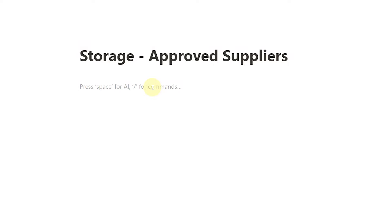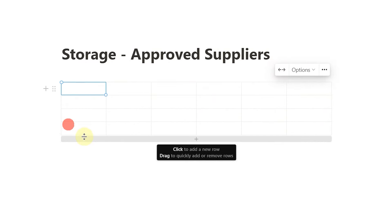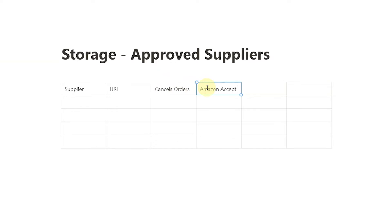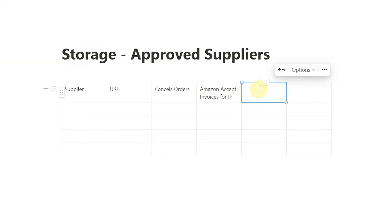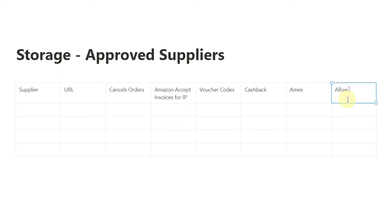When you're in here, think about having a list of approved suppliers — this is going to be really helpful. I might create a table. So I might do a normal table with columns: supplier, URL, and then things like — do they cancel orders, do Amazon accepts invoices for IP complaints, voucher codes, cashback, do they accept Amex, do they allow bulk orders? We just want to know this information to figure out which suppliers are really good and which ones to say no to. This might be the approved supplier list, or just a supplier list.